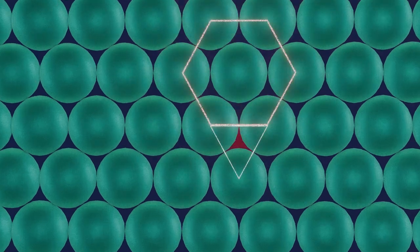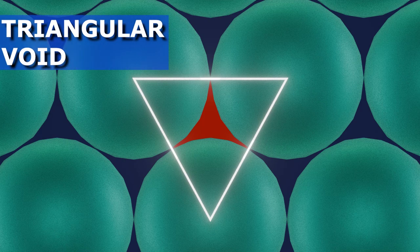To reduce the void size in 2D, we arrange adjacent rows in between each other making a hexagonal packing. The void between these is called the triangular void.